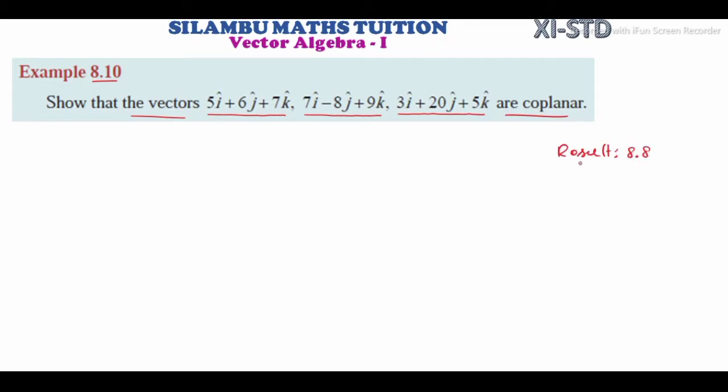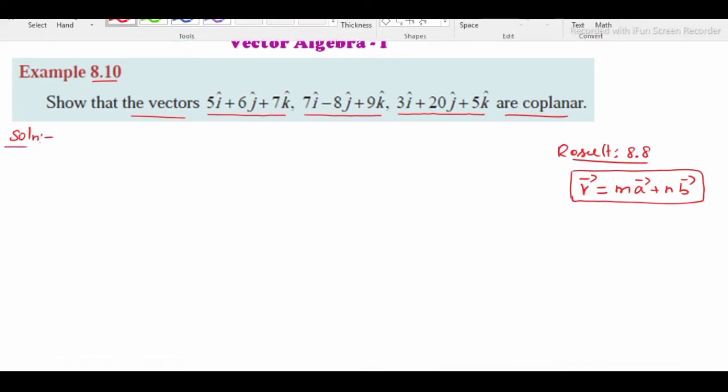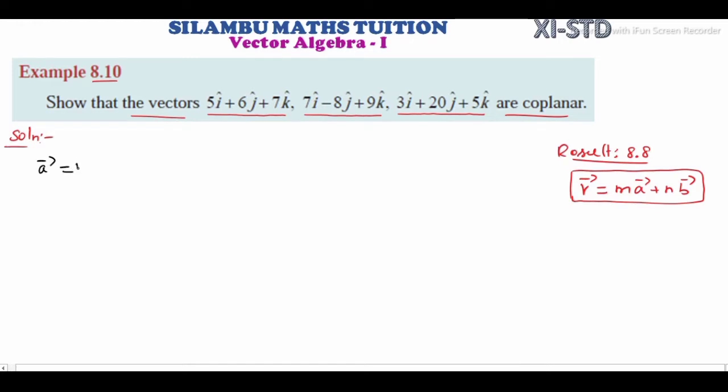First, to check if vectors are coplanar, let us use the result from Example 8.8. If r vector equals m times a vector plus n times b vector, then the vectors are coplanar. So if this condition holds, they are coplanar vectors. Let's define: a vector = 5i + 6j + 7k, b vector = 7i - 8j + 9k, c vector = 3i + 20j + 5k.